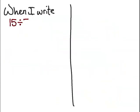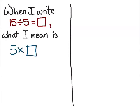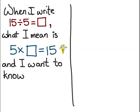So when I write 15 divided by 5 equals box, what I mean is 5 times box is equal to 15. I'm going to call that equation ice cream cone and I want to know what goes in the box.